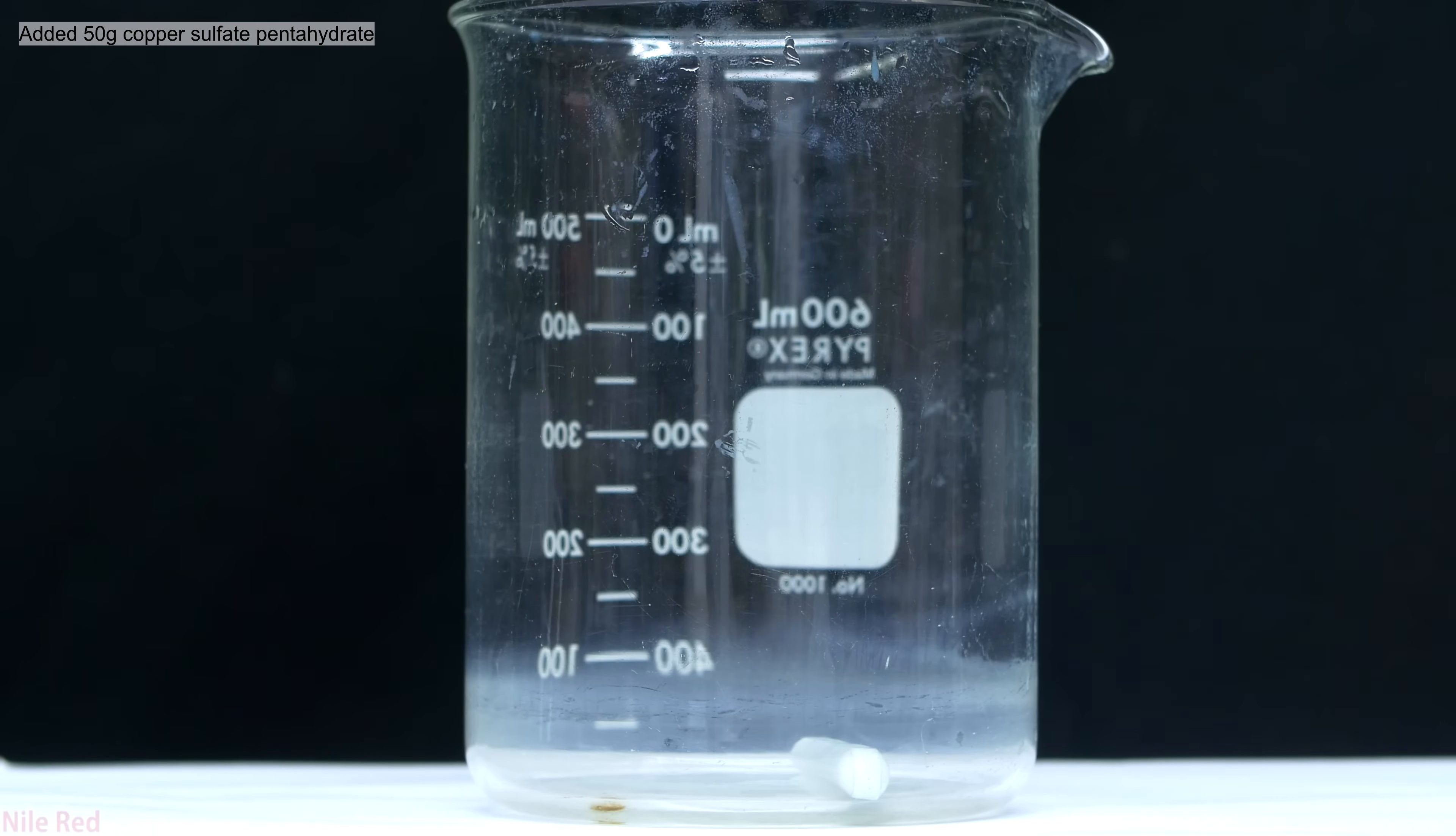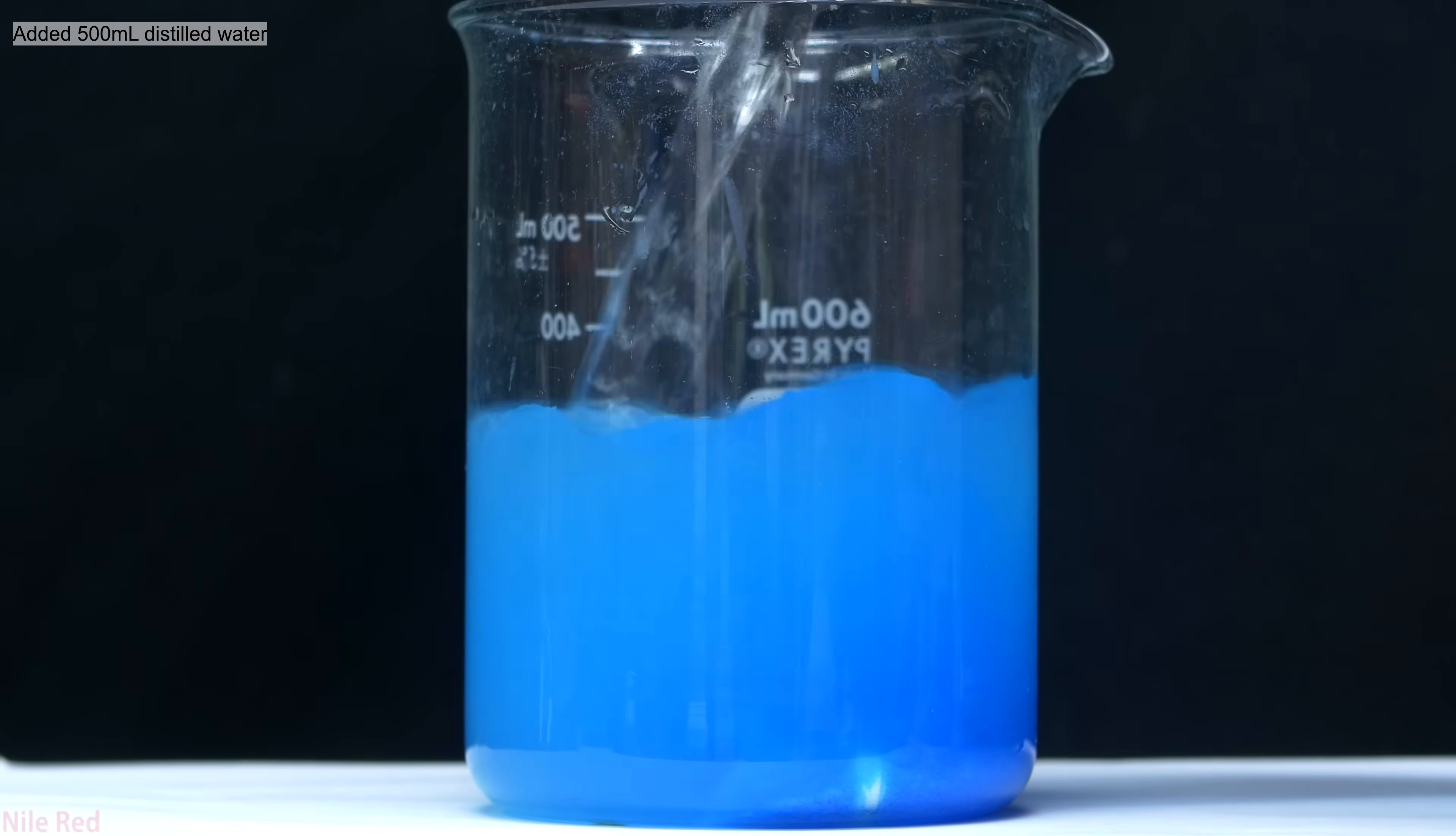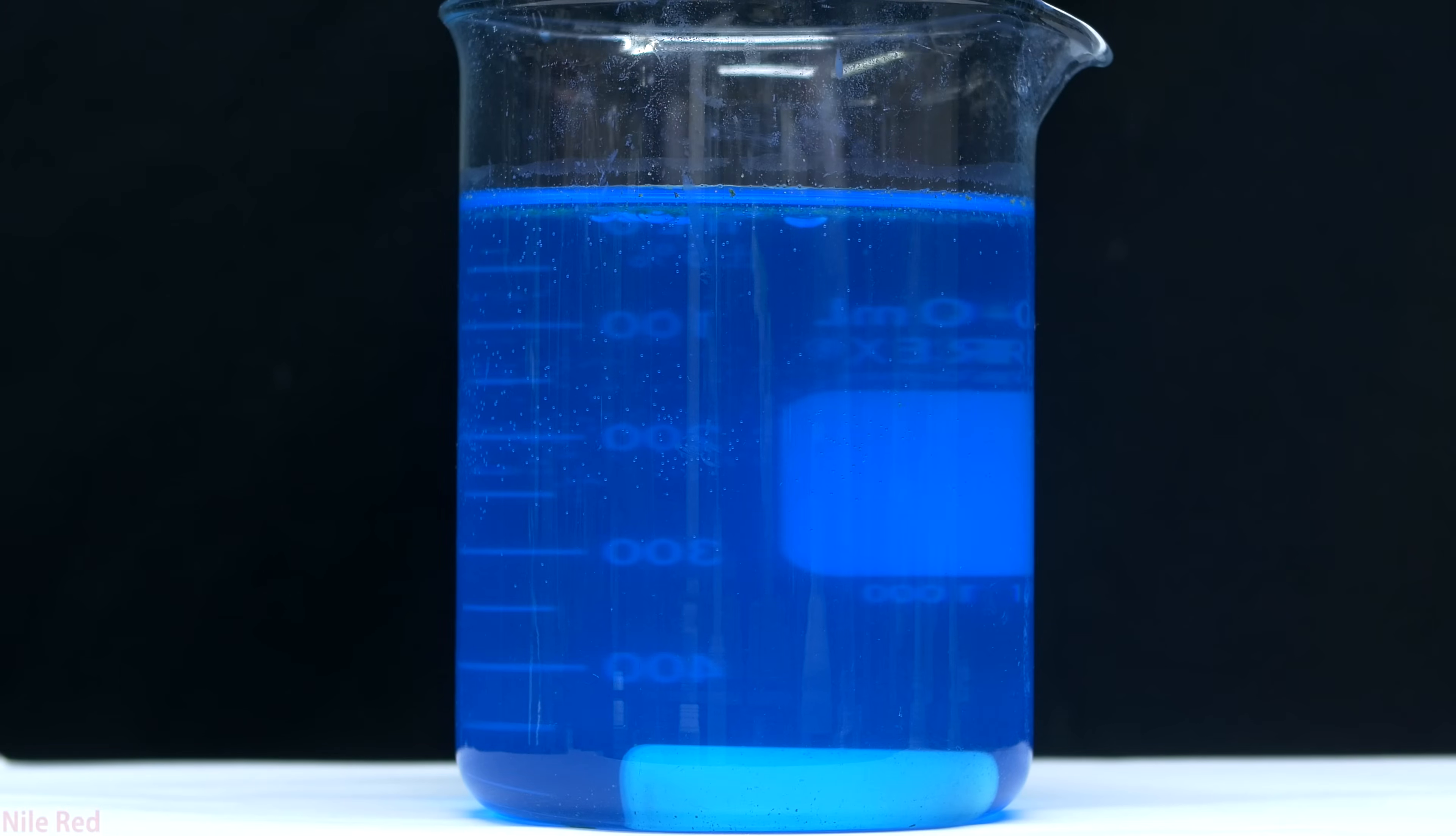I started off by adding about 50 grams of copper sulfate pentahydrate to a beaker. I then added in about 500 milliliters of distilled water to dissolve the copper sulfate. I have a magnetic stir bar inside and a magnetic stir plate below, so I turn that on to get things mixing. Eventually all of the copper sulfate dissolved, and you may not be able to see it here, but there was a lot of impurity floating around.